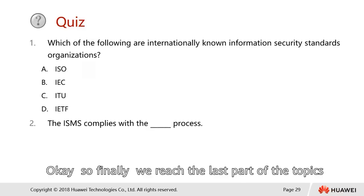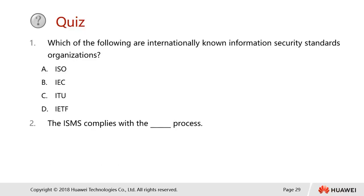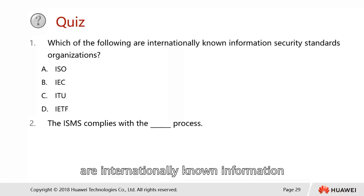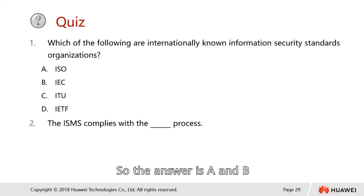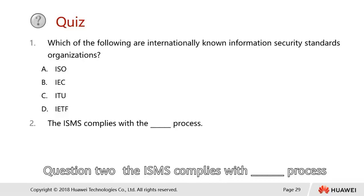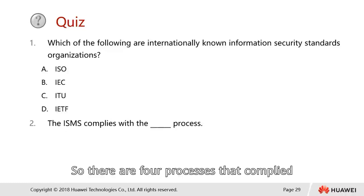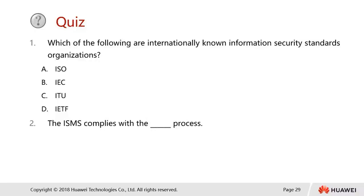We are reaching the last part of the topic. We have a small quiz. First question: which of the following are internationally known information security standards organizations? A — ISO, B — IEC, C — ITU, and D — IETF. The answer is A and B. Question 2: The ISMS complies with which process? There are four processes that comply under ISMS: Plan, Do, Check, and Act.